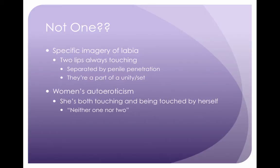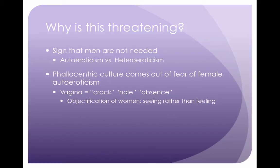So what does she mean by 'not one'? She's using specific imagery of labia here. She says that the two lips are always touching, and furthermore she says they're violently separated by the penetration of a penis. But the two lips aren't two independent entities — they're two parts of a unified set of sorts. So she's both touching and being touched by herself. This is where we get her sense of autoeroticism. She's neither one nor two in this sense. So why is this threatening? Because it signifies that the man is not needed — autoeroticism is juxtaposed against heteroeroticism.